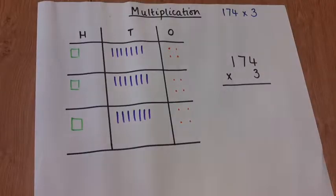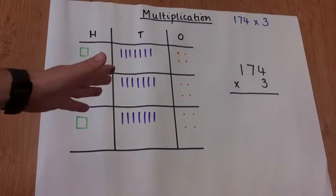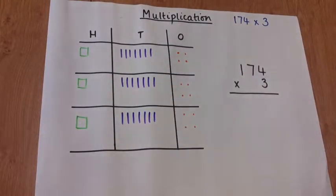Here we have 174 times by 3 laid out in the pictorial and the abstract. And once again, like all of the other calculations, it's really important that children see how the pictorial links to the abstract, because the aim is to move them onto the abstract as soon as they're ready.